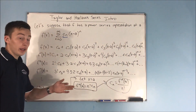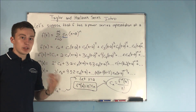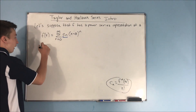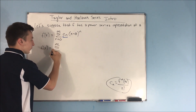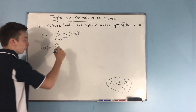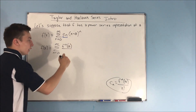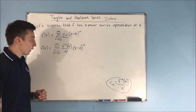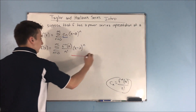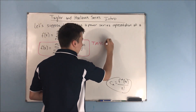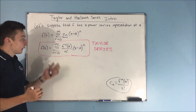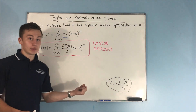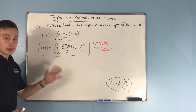This is what we're going to plug in to our series to get our Taylor series. So we now have that f of x is equal to the sum from n equals 0 to infinity of the nth derivative of f at a, over n factorial, times x minus a to the nth power. This right here is called the Taylor series, and it allows us to represent more functions as power series.